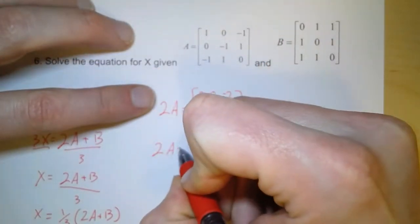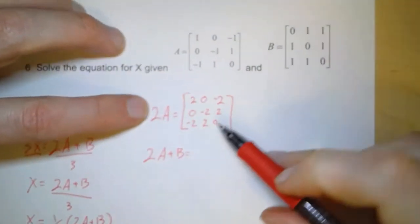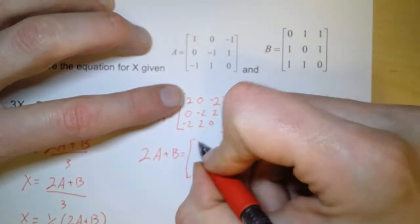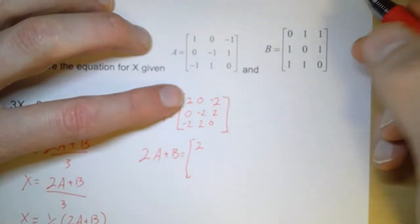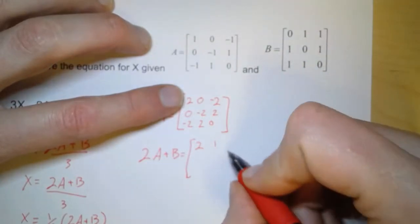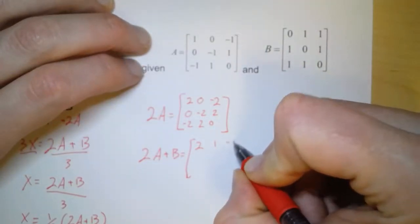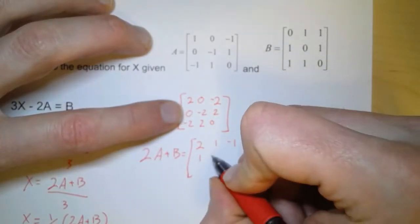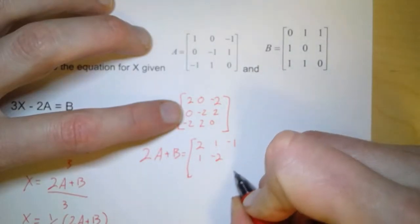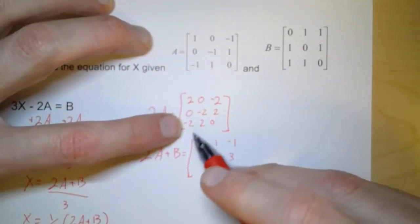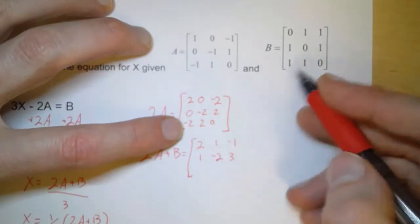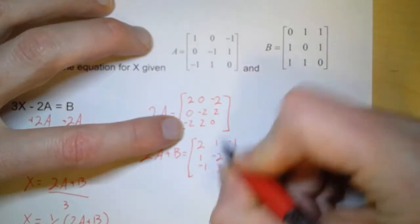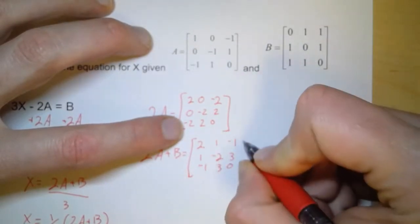So now, if I have 2A, now I'm going to add B to that. So across the first row, 2 plus 0 is 2. 0 plus 1 is 1. Negative 2 plus 1 is negative 1. For the middle row, 0 plus 1 is 1. Negative 2 plus 0 is negative 2. And 2 plus 1 is 3. For the final row, negative 2 and 1 is negative 1. 2 and 1 give me 3. And 0 and 0 gives me 0.